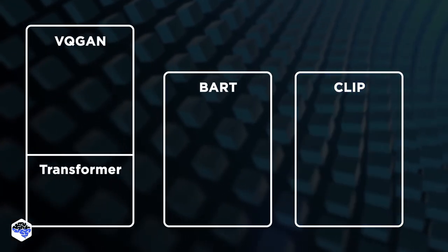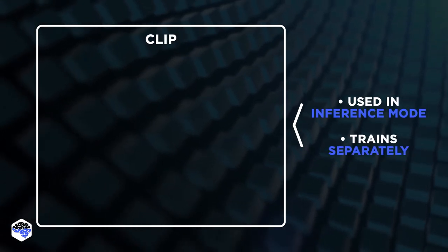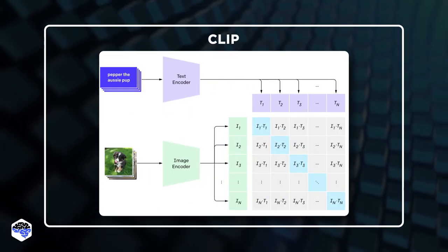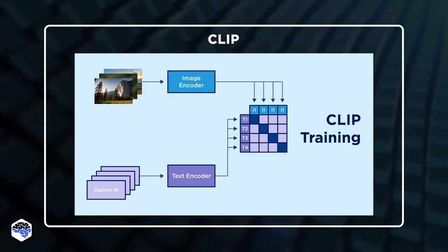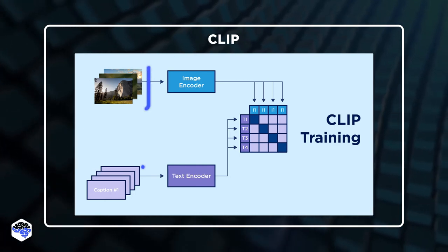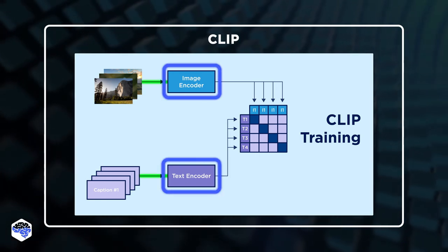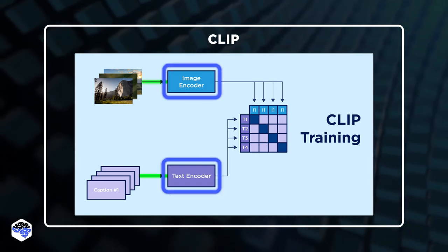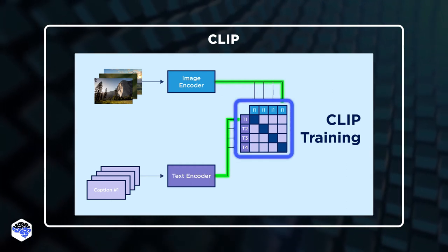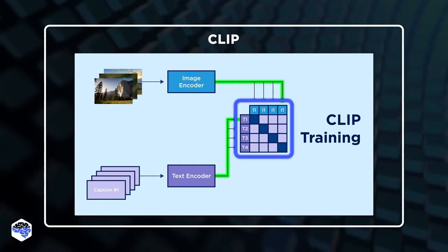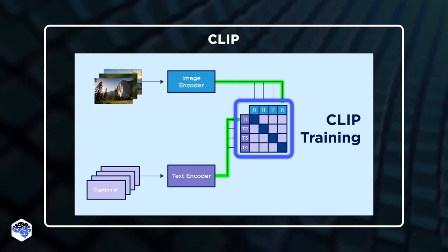The third part is CLIP. CLIP is only used in inference mode and trains separately. CLIP is a model that takes text and image embeddings and tells how well they match. To train the CLIP model, we need a large number of image and text pairs. Dedicated encoders transform images and text into the same vector space. For each pair, the dot product between them is calculated. The objective is to have close text and image representations for matching pairs, and distant representations for non-matching pairs.